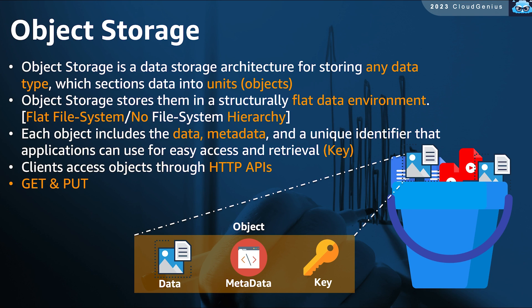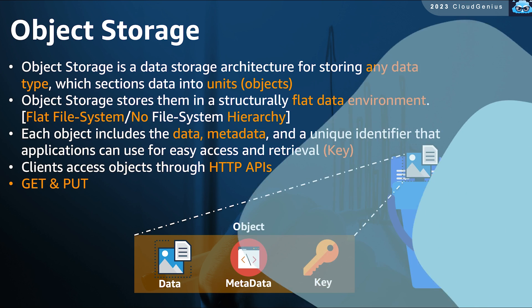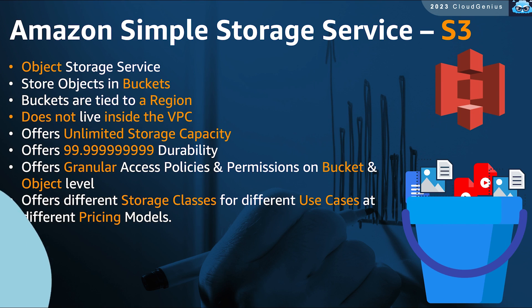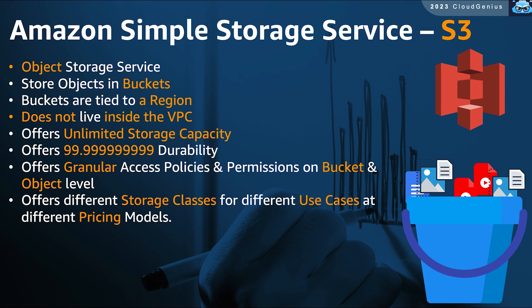Clients use HTTP protocol to read and write objects, but we do not call them read or write requests. Instead, we call them get and put requests. The main object storage service from AWS is Amazon S3, simple storage service.